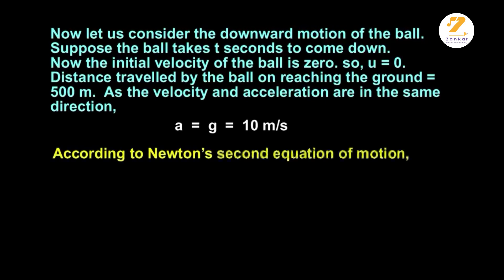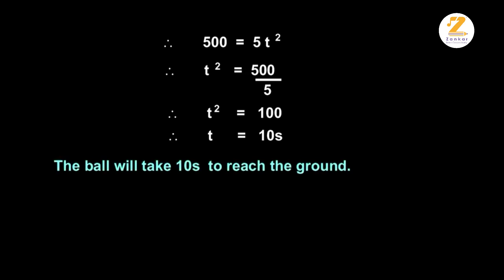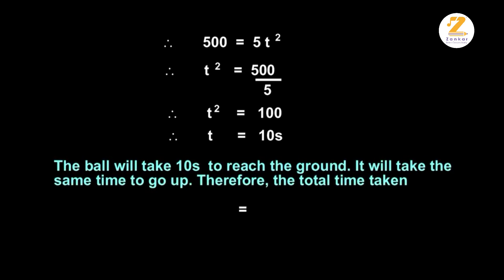According to Newton's second equation of motion, s is equal to ut plus 1 upon 2 at square. Therefore, 500 is equal to 0 plus 1 upon 2, 10 t square. Therefore, 500 is equal to 5 t square. Therefore, t square is equal to 500 upon 5. Therefore, t square is equal to 100. Therefore, t is equal to 10 seconds. The ball will take 10 seconds to reach the ground. It will take the same time to go up. Therefore, the total time taken is equal to 2 into 10 is equal to 20 seconds.